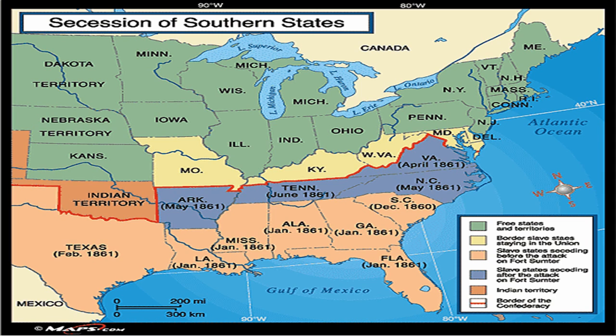Even though these states had formed the Confederacy, there were some states that wanted to join them but were really border states. Lincoln and the Union were going to keep a close eye on these border states and try to keep them in the Union. These states, as you can see from the map, are Delaware, Maryland, what will become West Virginia, Kentucky, and Missouri.